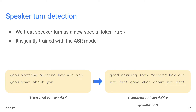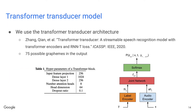The speaker turn detection model is very similar to a conventional ASR model. The only difference is that we introduce a new special token, ST, that represents a speaker turn. For example, the left-hand side is the text transcript used to train a conventional ASR model, and the right-hand side is the augmented transcript with the speaker turn token used to train the joint ASR and speaker turn model.